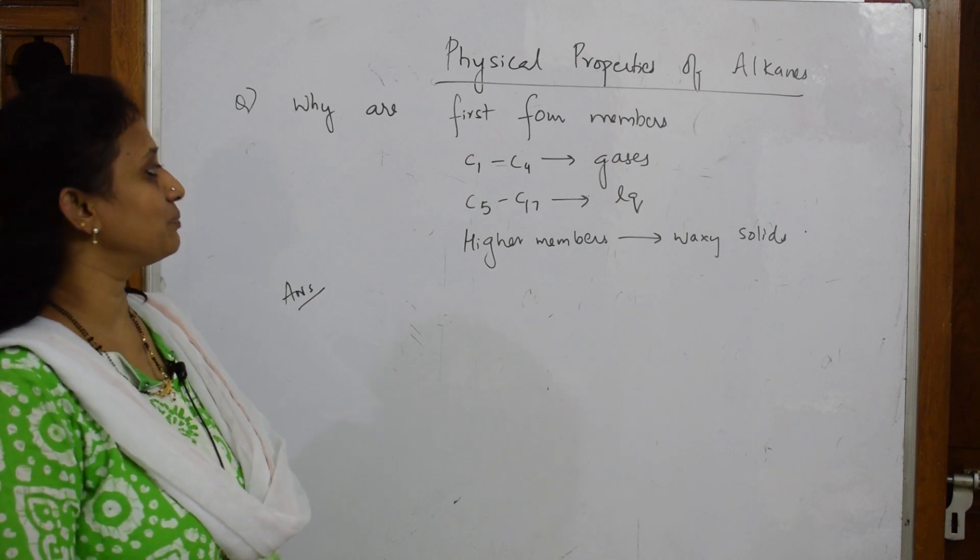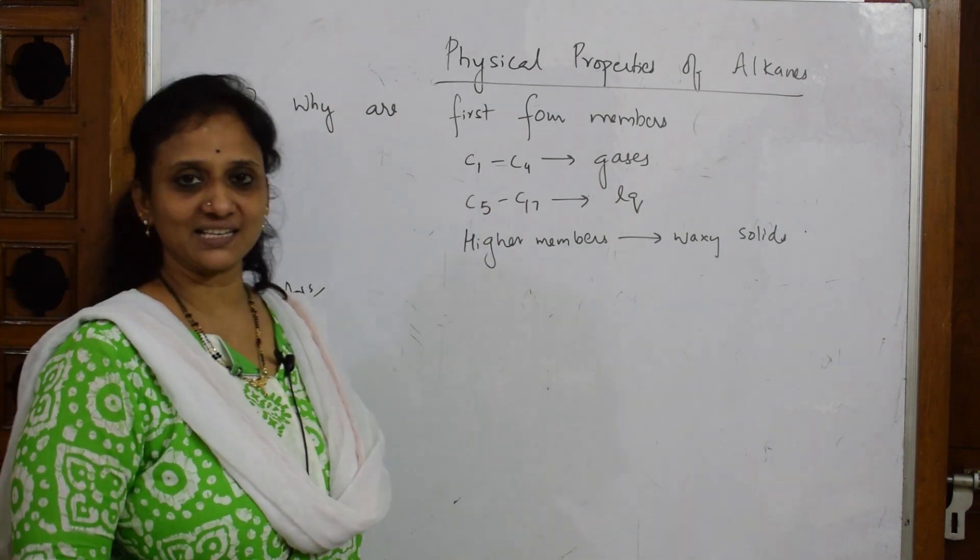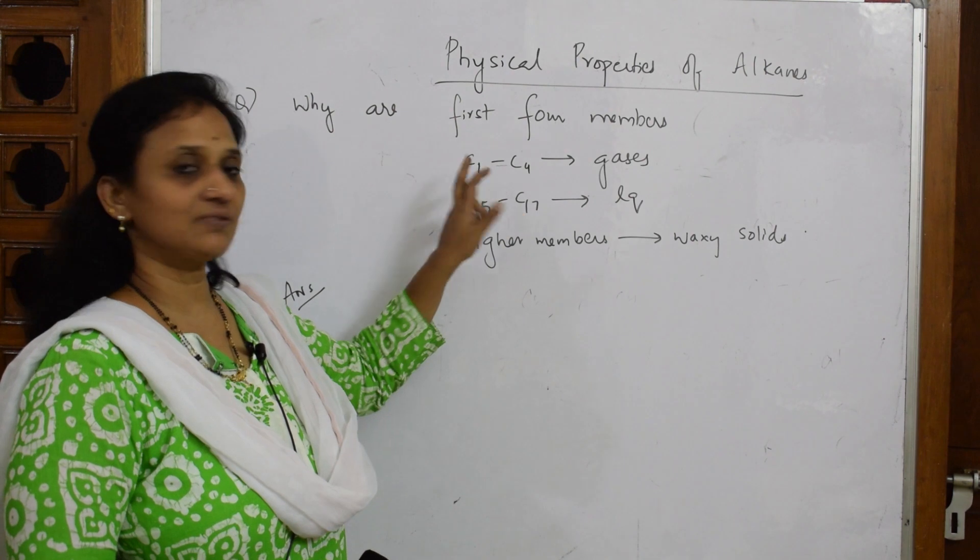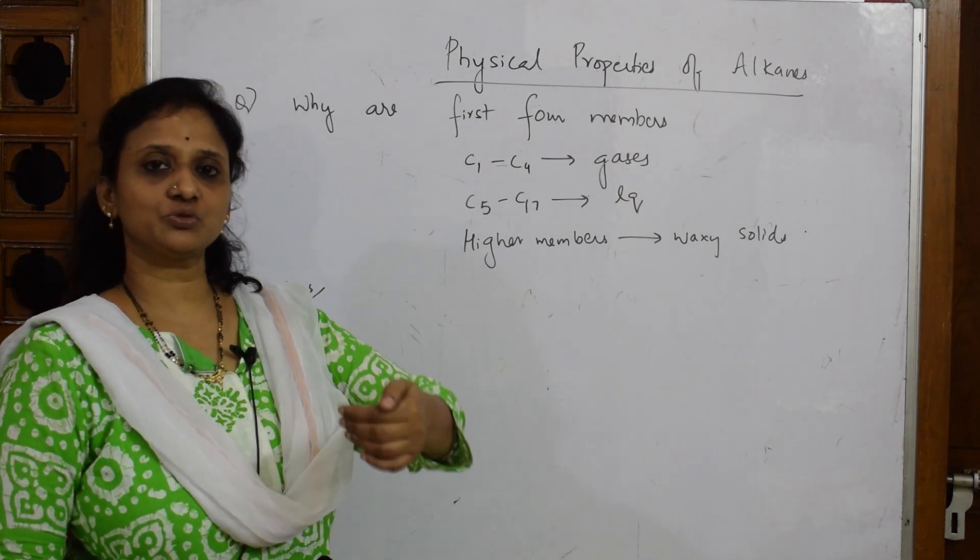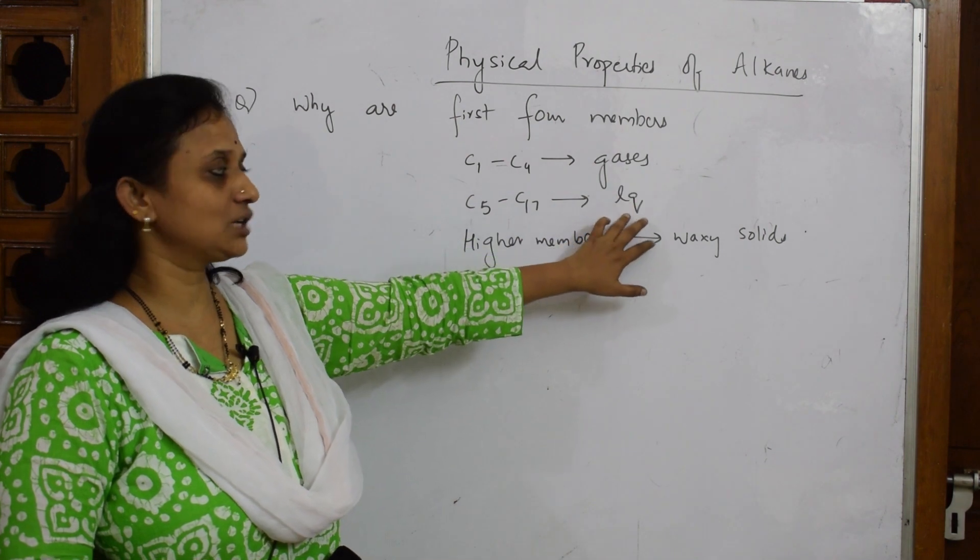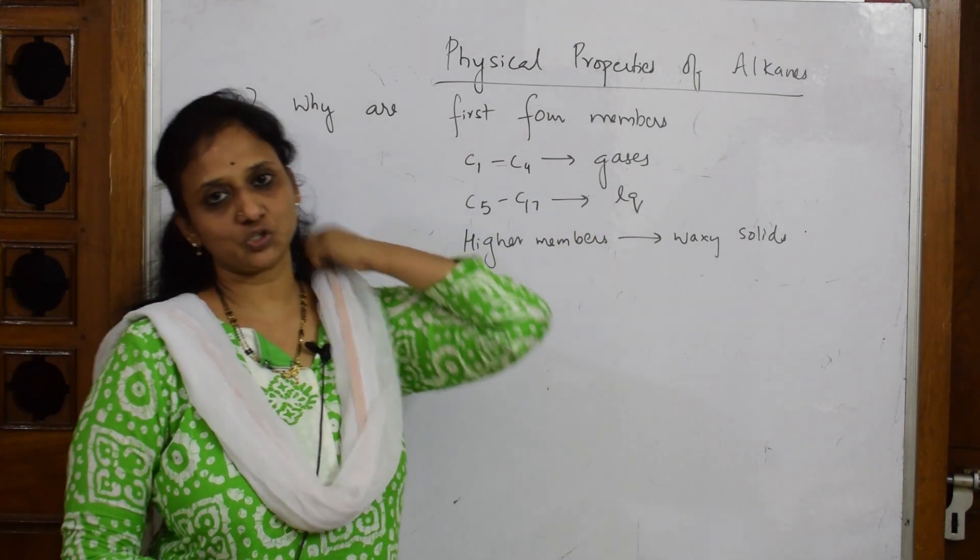What is this question? Why are the first four members, that is C1 to C4, gases? C1 is methane, ethane, propane, butane - why are they gases? And remaining are liquids, and the higher members are waxy solids. What is the reason?